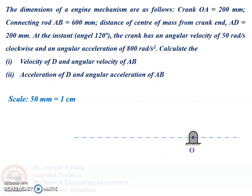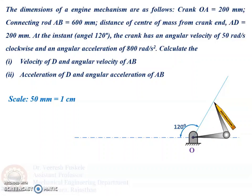At point O, we draw a line at an angle of 120 degrees. Since the crank is 200 mm and according to the scale taken, the crank will be represented by 4 cm. So we will take up a length of 4 cm on our compass and cut the length on this line. We get the point A, and OA is the crank.